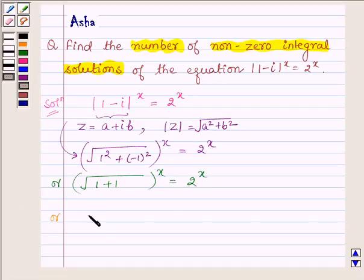Which further implies that (√2)^x = 2^x, and this is possible